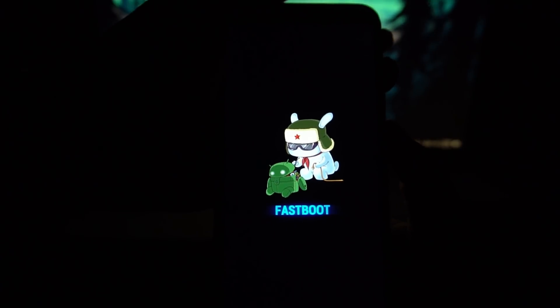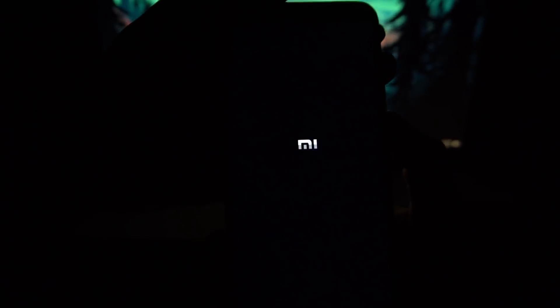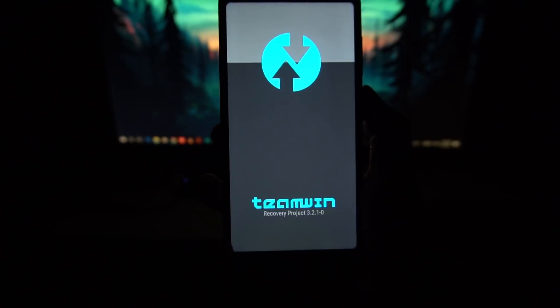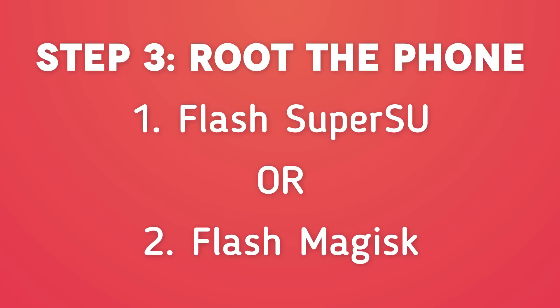To boot into recovery mode, press and hold the Power button and Volume Up button, and keep pressing until you see the TWRP logo. There are two ways to root your phone: you can flash the SuperUser zip file, or you can root using Magisk. I would recommend flashing SuperUser, but if you want to use Magisk you can do that as well. Download either the SuperUser or Magisk zip file from the link in the description, then connect your phone to your PC while in TWRP recovery.